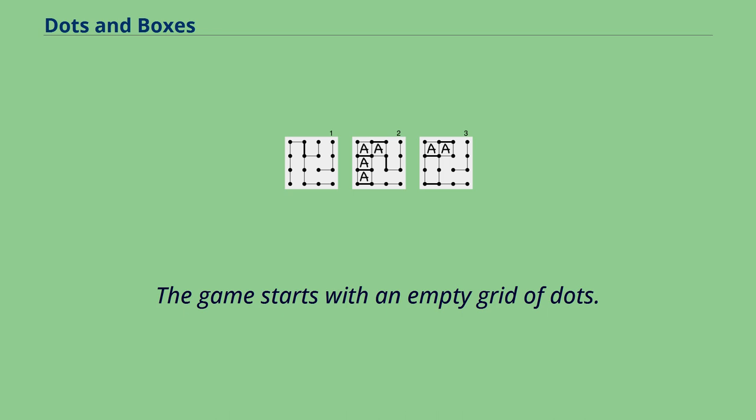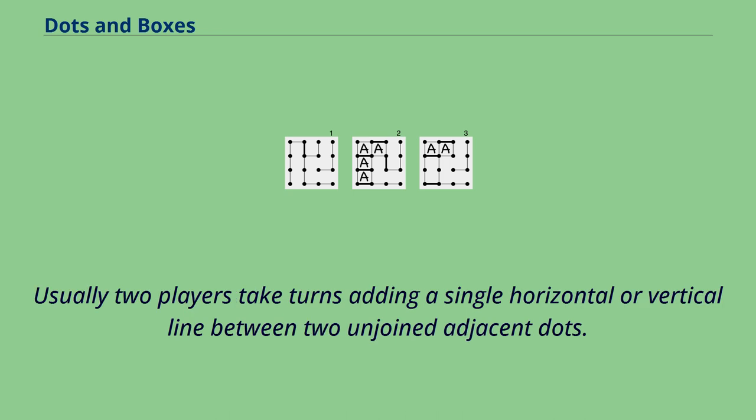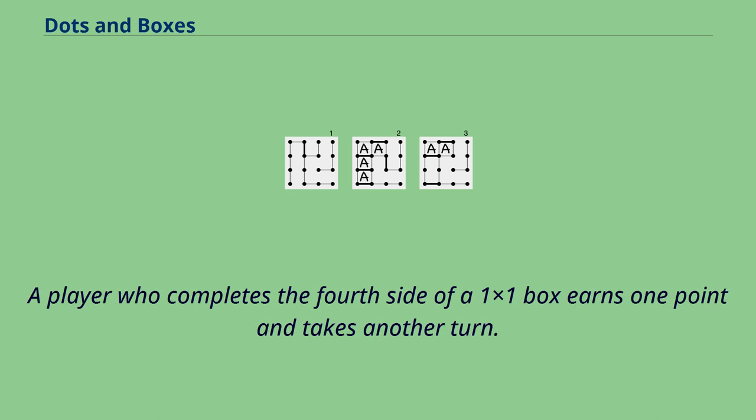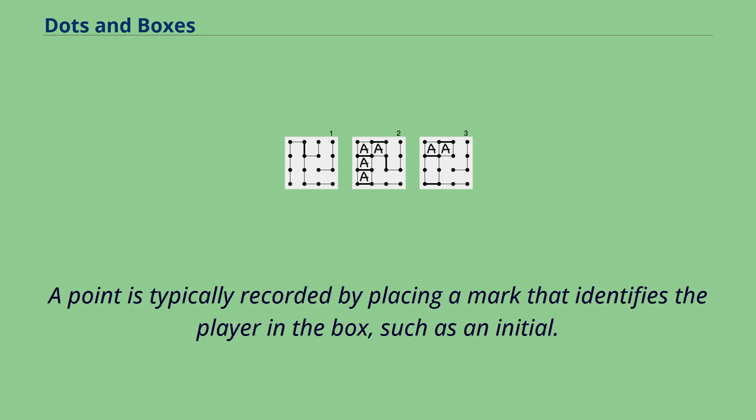The game starts with an empty grid of dots. Usually two players take turns adding a single horizontal or vertical line between two unjoined adjacent dots. A player who completes the fourth side of a 1x1 box earns one point and takes another turn. A point is typically recorded by placing a mark that identifies the player in the box, such as an initial.